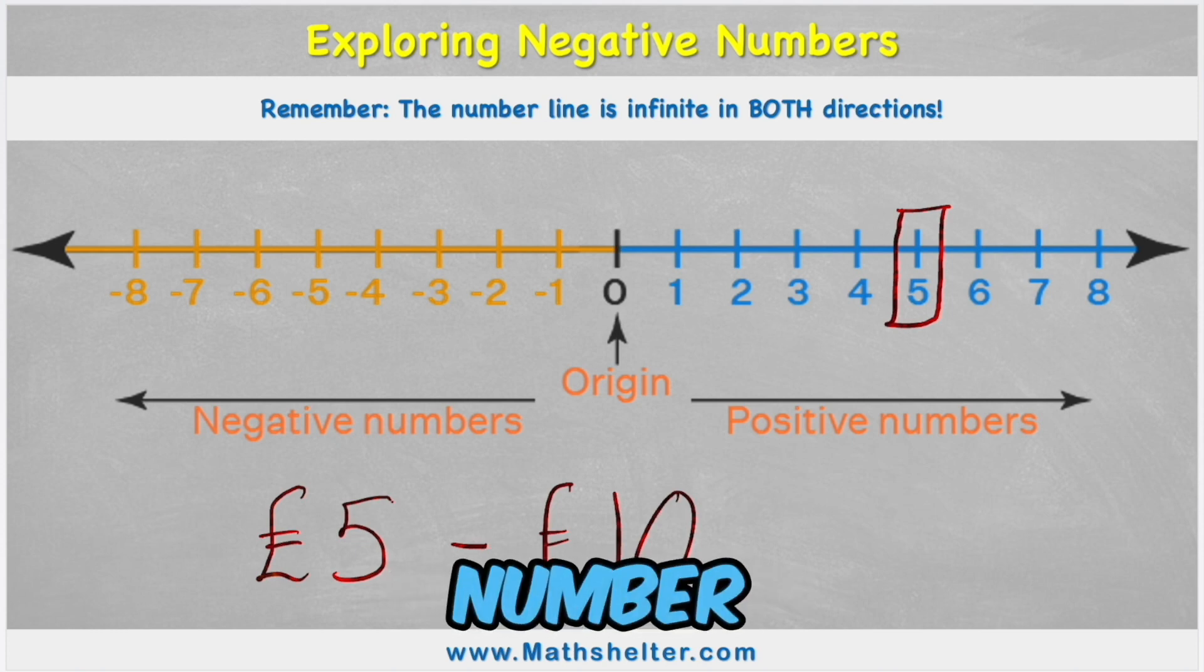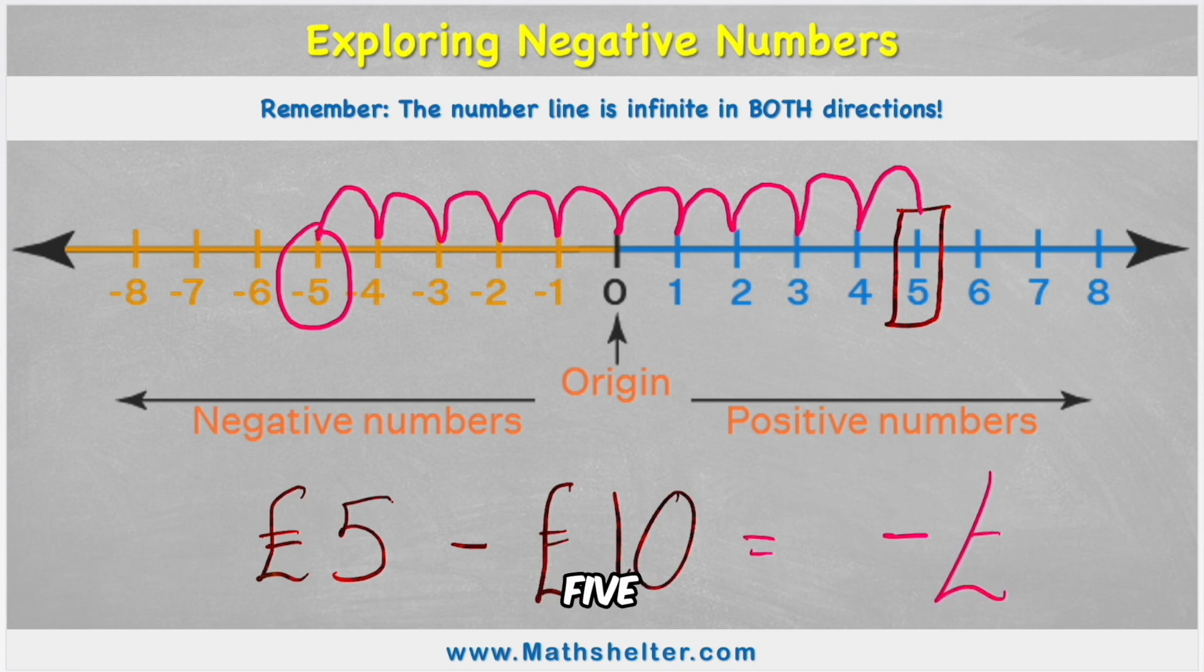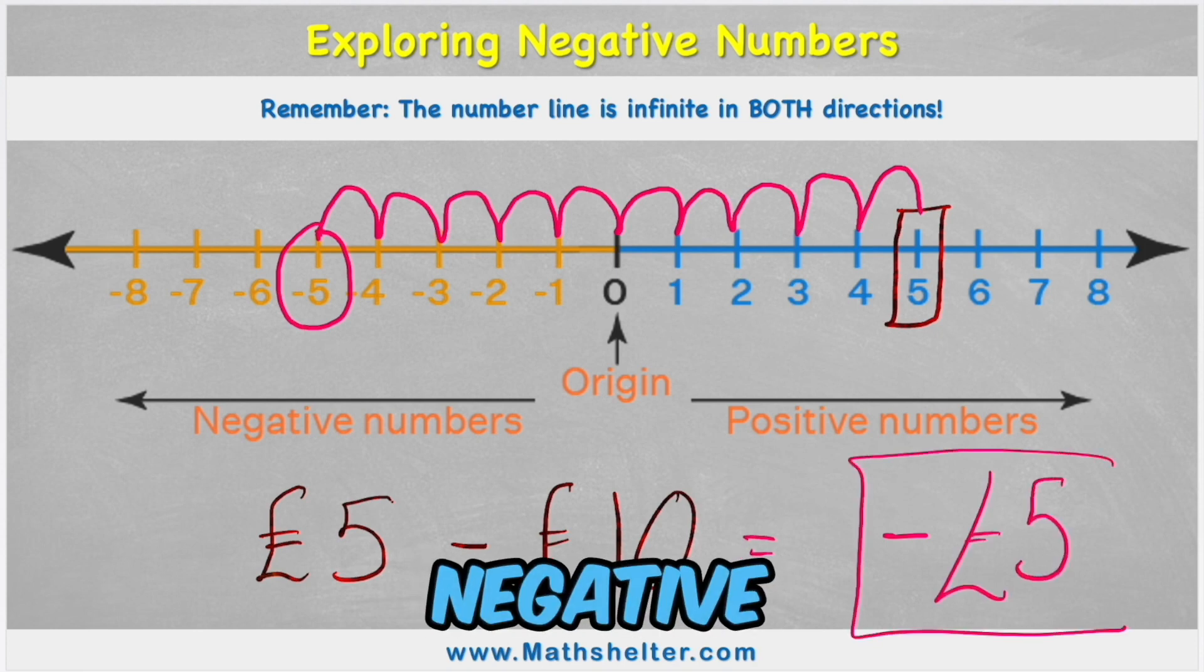So if I had to give my mum 10 pounds, I would come back down my number line. So I'd come one, two, three, four, five, six, seven, eight, nine, 10. And I would actually end up having minus five pounds. Or in other words, negative five.